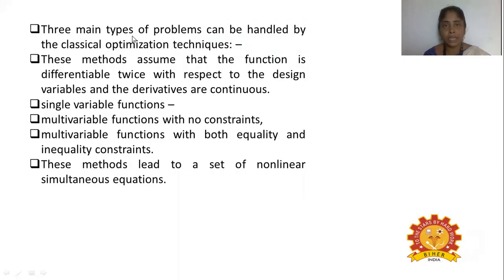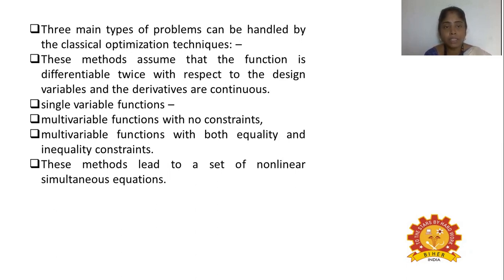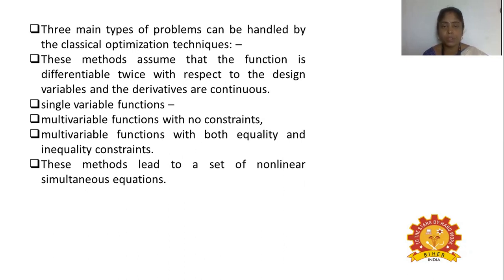In classical optimization, there are three problem types. The first involves functions — whether continuous, differentiable, or non-continuous — that impact the design of processes, equipment, or experiments (DOE). This method assumes the function is differentiable twice with respect to the design variable and that derivatives are continuous. The second concerns single-variable functions.